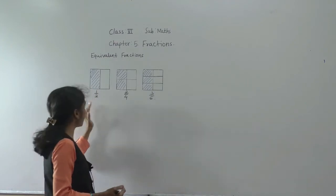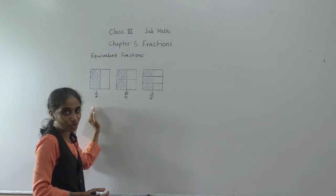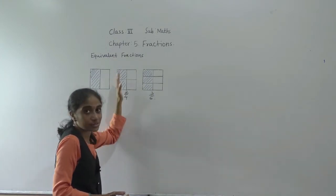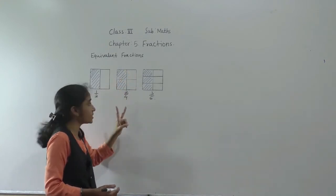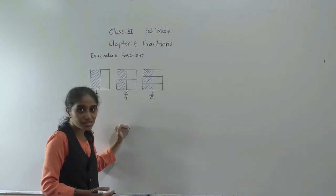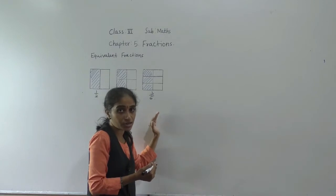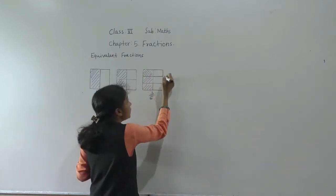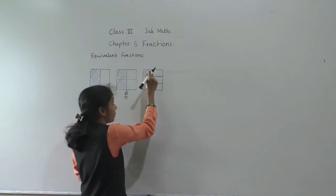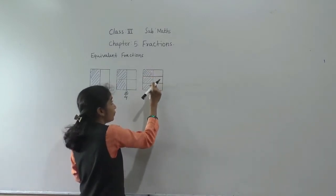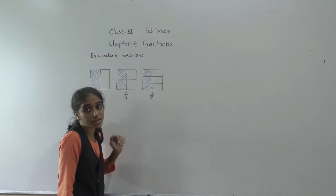The first figure shows half: two equal parts, one part shaded. The second figure also shows half: four equal parts, two parts shaded. In the third figure, observe that it is divided into six equal parts — one, two, three, four, five, six — and from six equal parts, three parts are shaded.